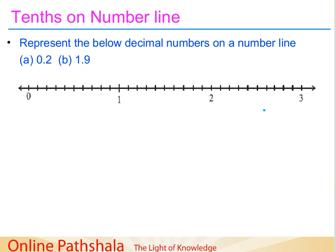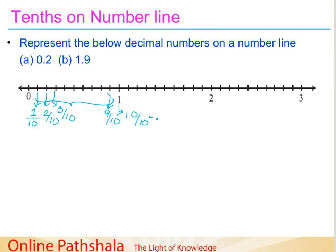Here you can see a number line: 0, 1, 2, 3. This is the space between 0 and 1, and I have divided this space into 10 equal parts. Now, we have already learned that if we divide this into 10 equal parts, the first part as a fraction will be 1 by 10. The second part will be 2 by 10, the third by 3 by 10, and so on. The ninth part will be 9 by 10, and the last part is 10 by 10, that is 1.